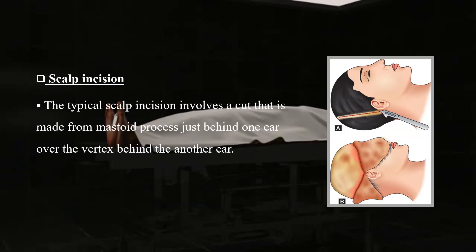The typical scalp incision involves a cut made from the mastoid process just behind one ear, over the vertex — the top of the head — and behind the other ear.